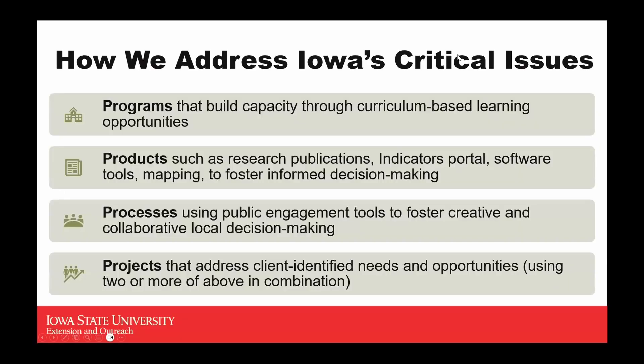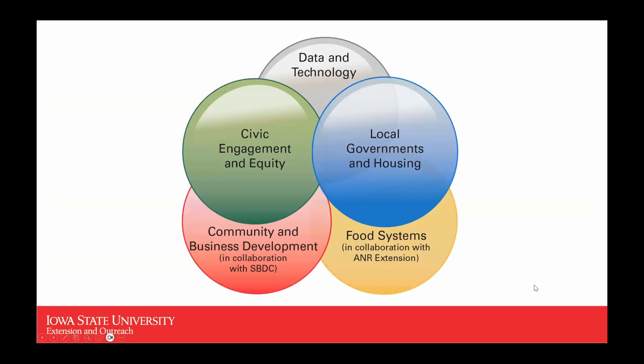CED uses our expertise to address critical issues through a variety of different ways. We have programs that build capacity. We have products, and the toolkits are two examples of these products. We engage different processes and do one-off projects around the state. We're organized in five different area topic teams: a data and technology team, a civic engagement and equity team, a team that focuses on local governments and housing particularly rural housing, a team that deals with food systems and local foods, and a community and business development team.